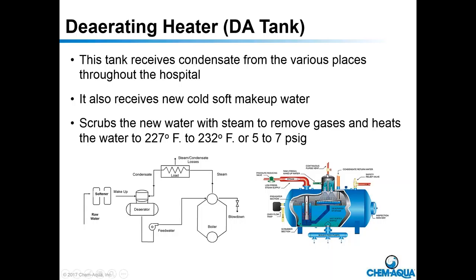The internals of a deaerator remove gases from the water so they don't recycle into the boiler. The correct temperature on most deaerators at a hospital is 227 to 232°F, which is 5 to 7 PSI. There is also a vented-to-atmosphere deaerator that operates under zero pressure and reaches 212°F at boiling temperature, but you might find that style only 1 in 25 times.